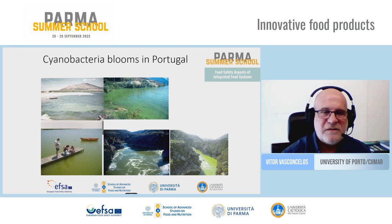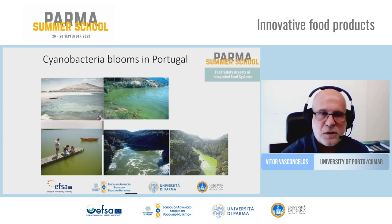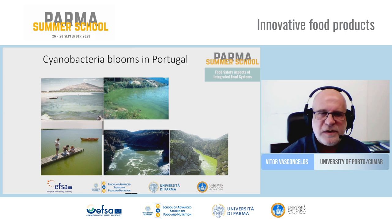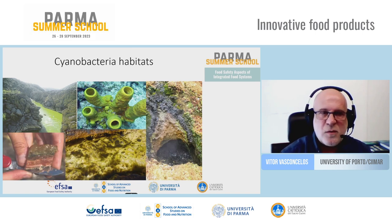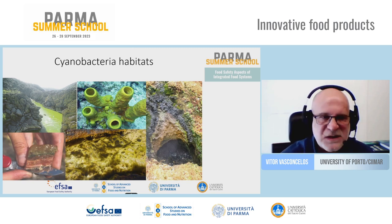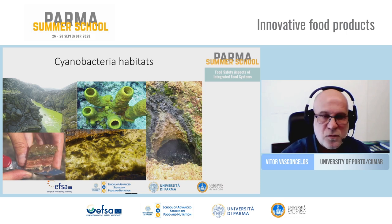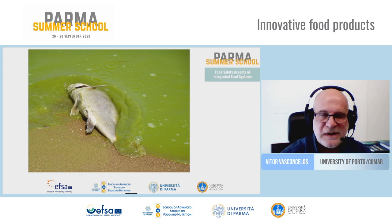Usually when we speak about oxygen we talk about forests, but in fact it is in the ocean where most of the oxygen is produced. However, whenever there is high eutrophication of ecosystems — and these are some examples of cyanobacteria blooms in Portugal — they can occur in high densities, causing problems for the use of water for drinking, aquaculture, recreation, and agriculture. Cyanobacteria live in a very wide array of environments: not just water, but also soils, hot springs, caves, and in symbiosis with other organisms.